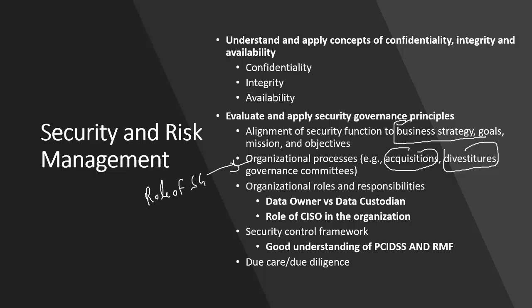The next part covers roles and responsibilities. You need a good understanding of data owner and data custodian. The data owner is accountable for data; the data custodian manages data on behalf of the data owner. You also need to understand the role of the CISO — the CISO should report as high as possible in the organization for two reasons: to maintain visibility and transparency, and to present information security directly to the board, limiting distortion through multiple layers.